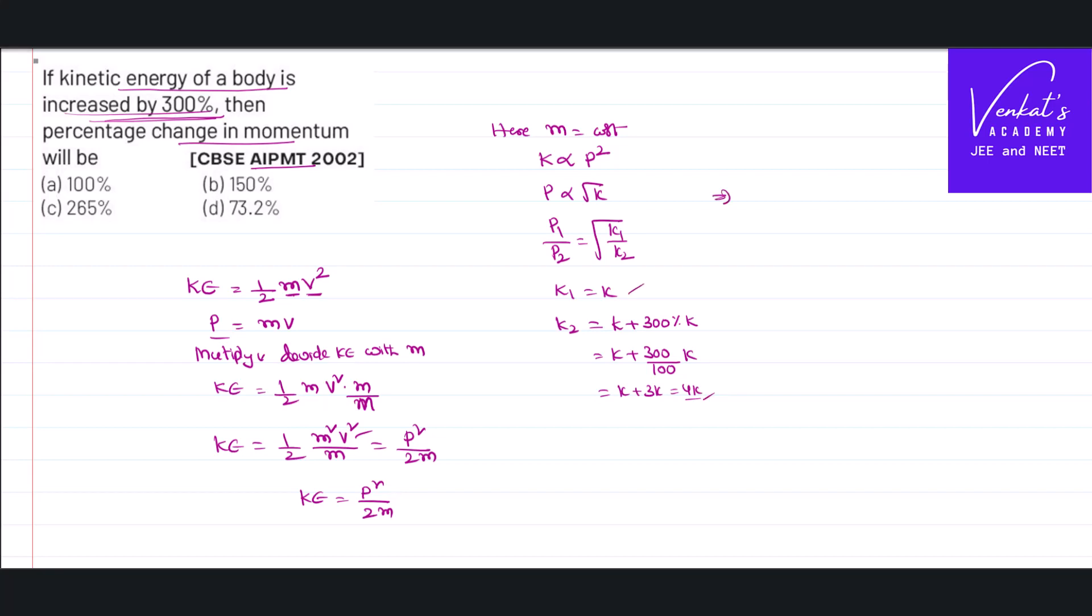That implies P1 by P2 equal to root of K by 4K. K can be cancelled. Square root of 1 by 4 equal to 1 by 2. It implies final momentum is 2 times of initial momentum. But he is asking change in the momentum. So P2 minus P1 is 2P1 minus P1, that is equal to P1.